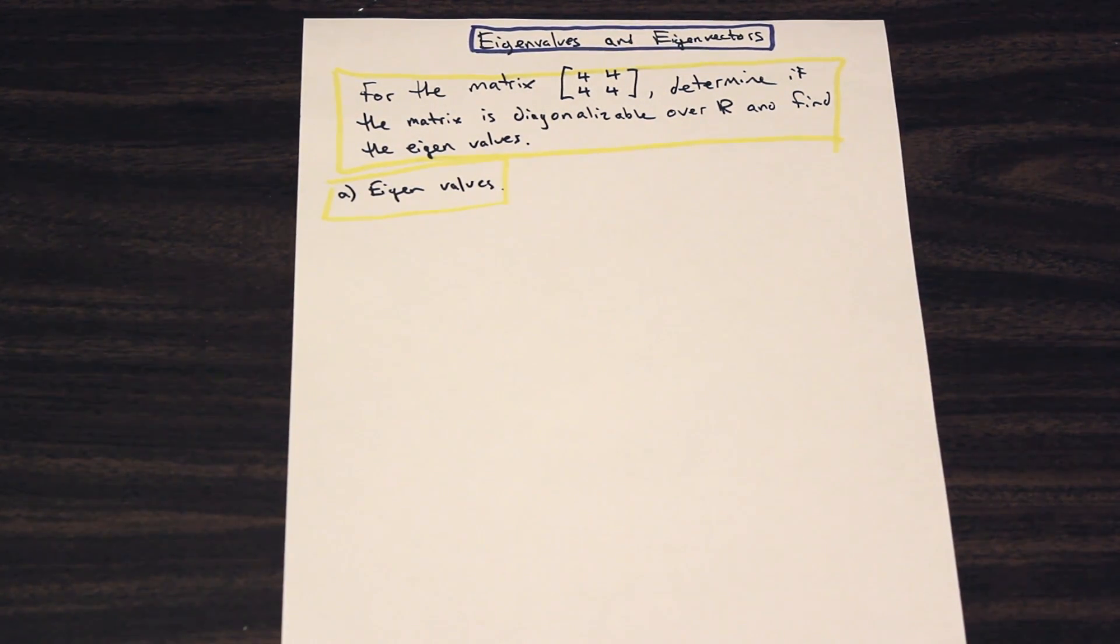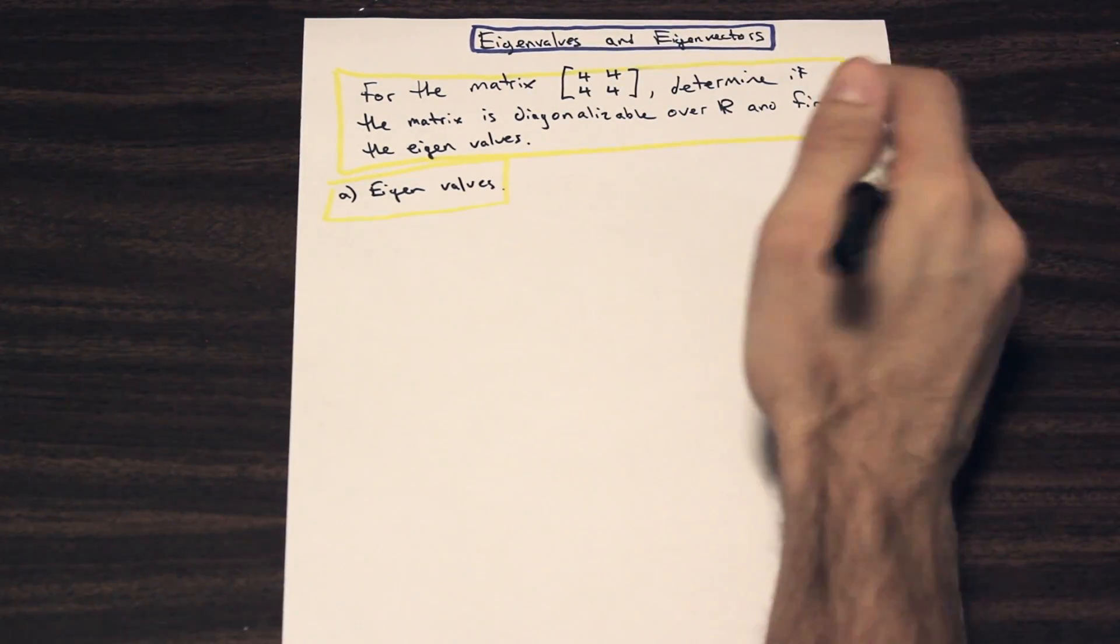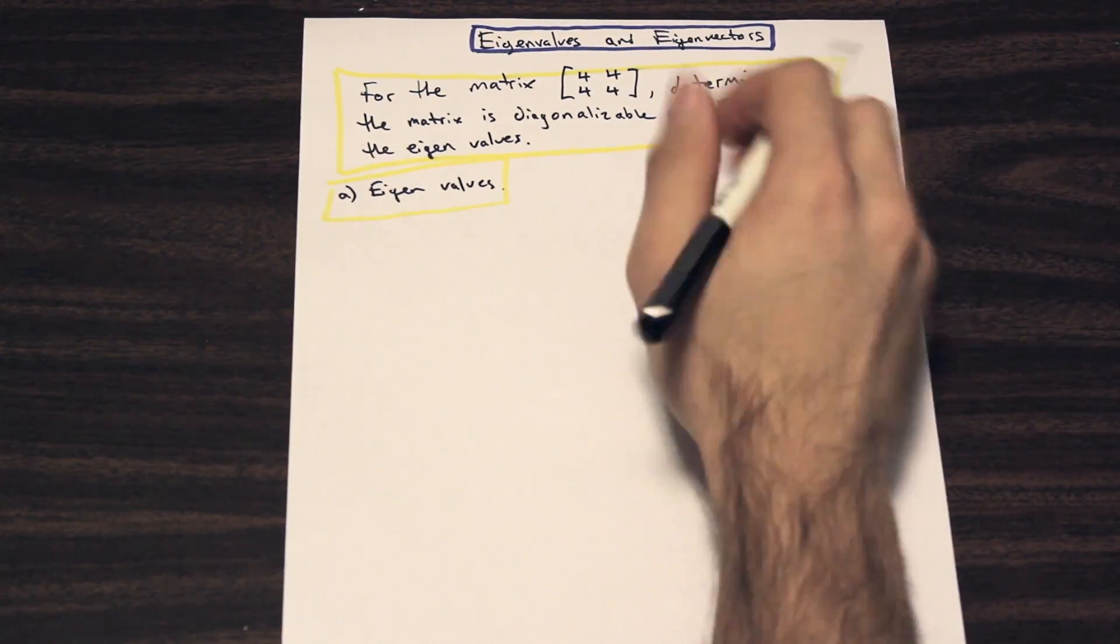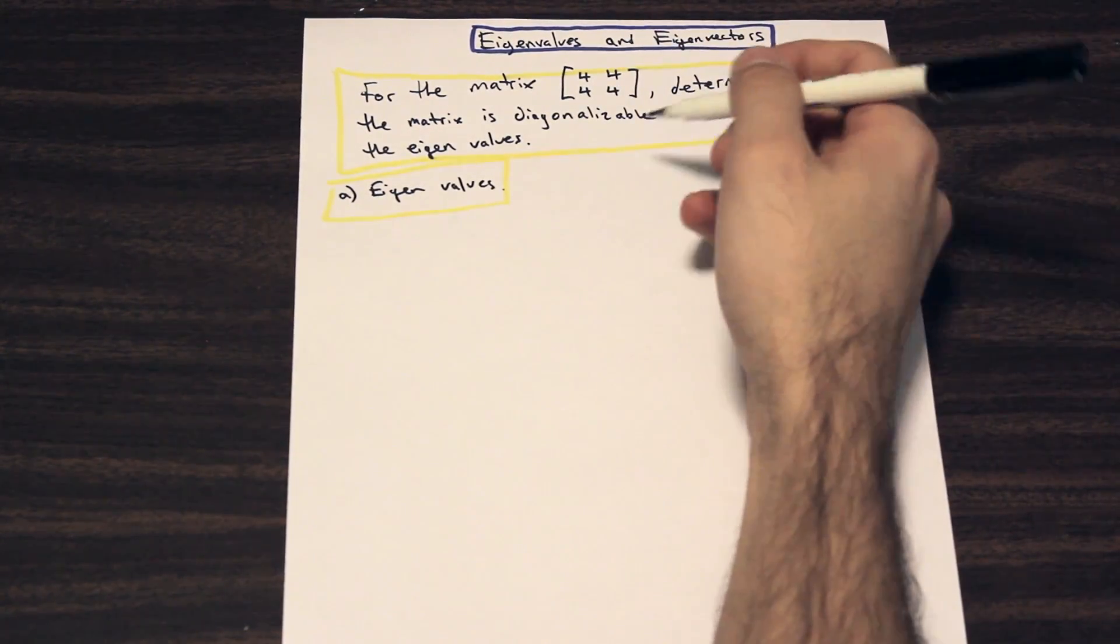So let's read the question. For the matrix that we have there, determine if the matrix is diagonalizable over R and find the eigenvalues. The first step isn't really that hard. You might just have to practice and brush up on your factoring skills when finding the eigenvalues. 3x3 matrices are a little bit harder, but for this, it's pretty straightforward. Like I said before, these are all past exam questions, so these are things that you can definitely expect on your exams that are coming up.